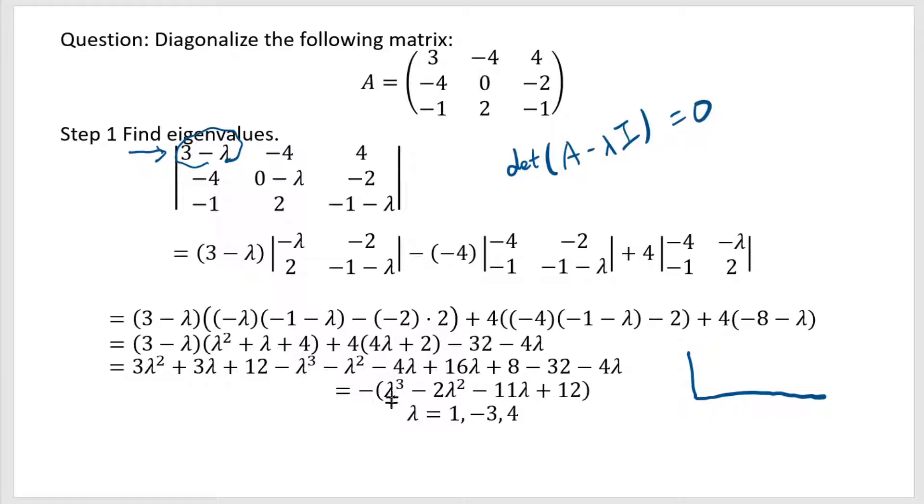So for example, if I plug in 1, I see that this becomes 0 because 1 minus 2 is negative 1, negative 1 minus 11 is negative 12, plus 12 is 0. So if you put 1, negative 2, negative 11, 12, then you put 1. 1 comes down, 1 times 1 is 1, negative 1, negative 1, negative 12. Negative 12 goes to 0. So this is called synthetic division.